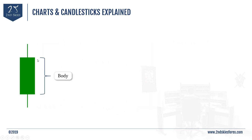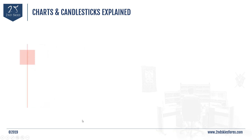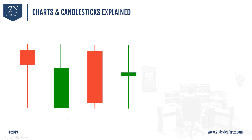To summarize: the middle filled rectangle is called the body, the spikes sticking out at the top are called the upper wick, and the lower spike is called the lower wick. These candlesticks can show up in any different shape and size, and it completely depends on what price did within that particular time frame — whether it's a daily chart, a four-hour chart, a one-hour chart, or even a one-minute chart where each candlestick represents one minute.